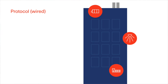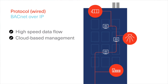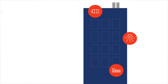Another wired option is BACnet over IP. This uses the same wired Ethernet network that may already exist in your building for your computers. Choose this medium when you need high-speed data flow, or you're going to need anytime, anywhere access to your network through the cloud.